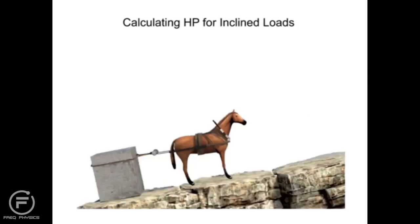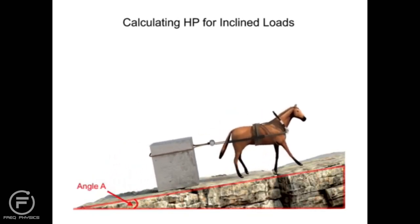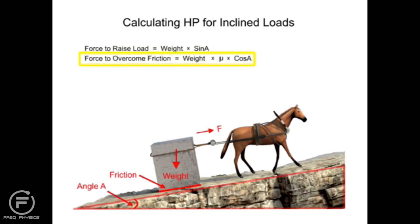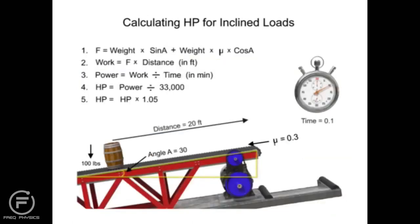If the distance to be traveled isn't on a horizontal surface, the angle of the surface must be taken into account. To determine the total force required, we must add the force required to raise the load to a higher elevation with the force required to overcome the friction. The total force is equal to the weight times sine a, plus the weight times the coefficient of friction times cosine a. Once these two forces are combined, we can continue with the same steps used previously to calculate the size of the motor required.